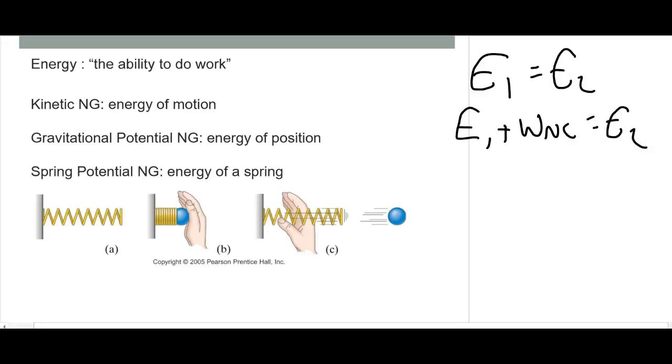Now, what types of energy are there? Well, the first type is kinetic energy, energy of motion. If the object has a velocity, it has kinetic energy, and we know that by the equation kinetic energy equals one-half mv squared.